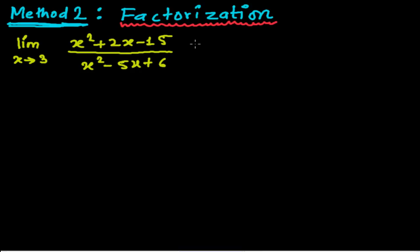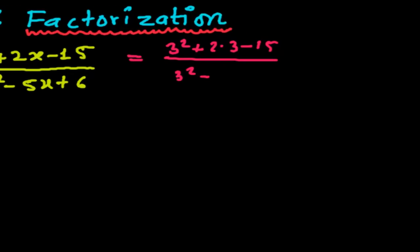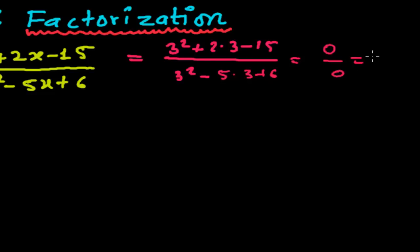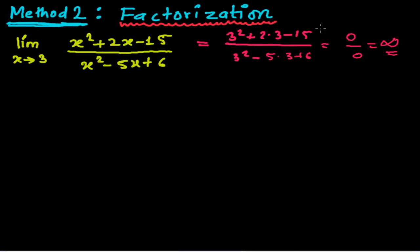If you just plug the value 3 here, what you'll get — writing in short form: 3 squared plus 2 times 3 minus 15, whole divided by 3 squared minus 5 times 3 plus 6. You get 9 plus 6 = 15, minus 15 = 0 on top, and similarly the denominator gives 0. So you're getting an undefined value.